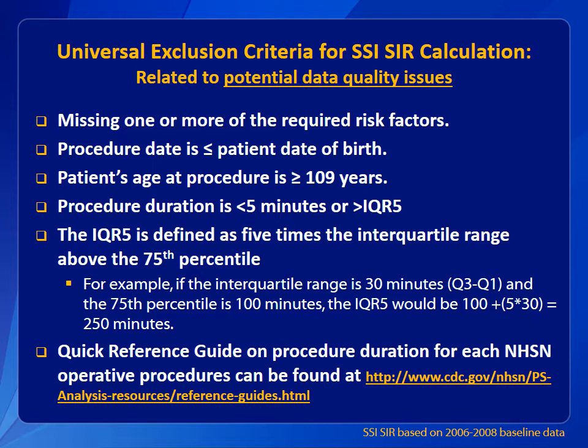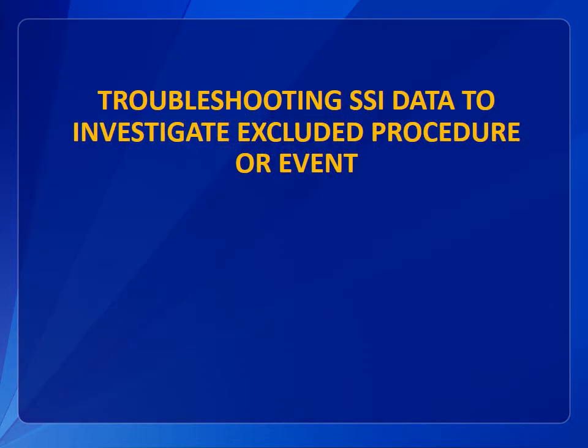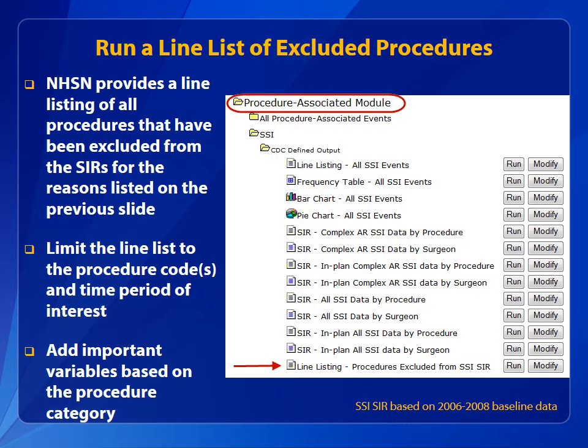A quick reference guide on the procedure duration for each of the procedures is on the NHSN website. Now, let's review how to troubleshoot discrepancies in your SSI data. To investigate the list of excluded procedures and events, run a line list as shown here. Be sure to limit the line list to the procedure code or codes and time period of interest. Add important variables based on the procedure category.